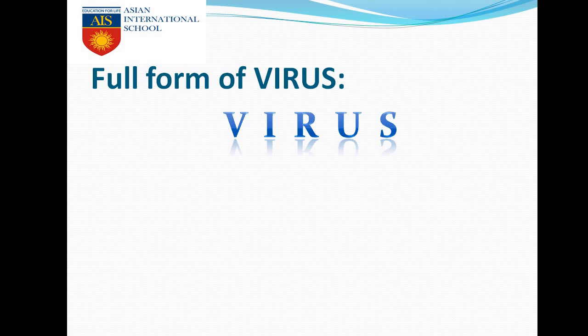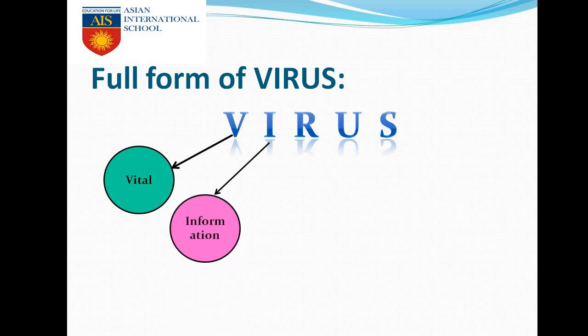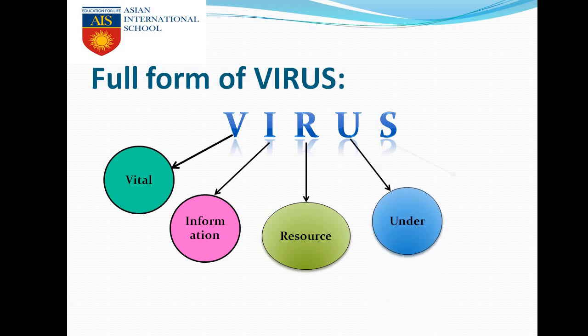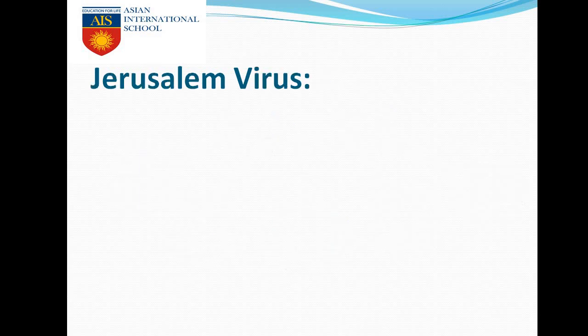The spelling of virus is V-I-R-U-S. V stands for Vital, I stands for Information, R stands for Resource, U stands for Under, and S stands for Size. So the full form is: Vital Information Resource Under Size.